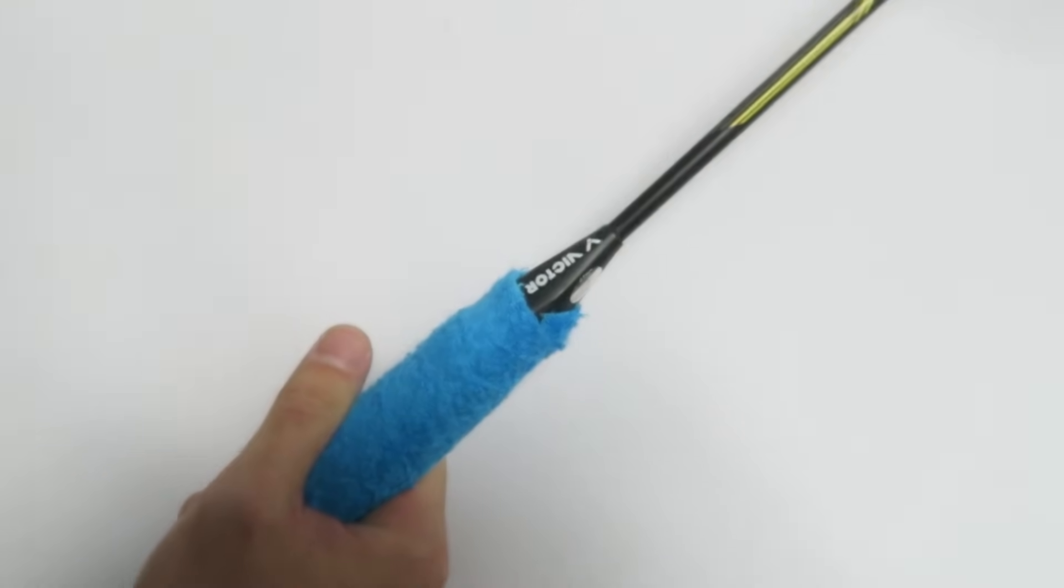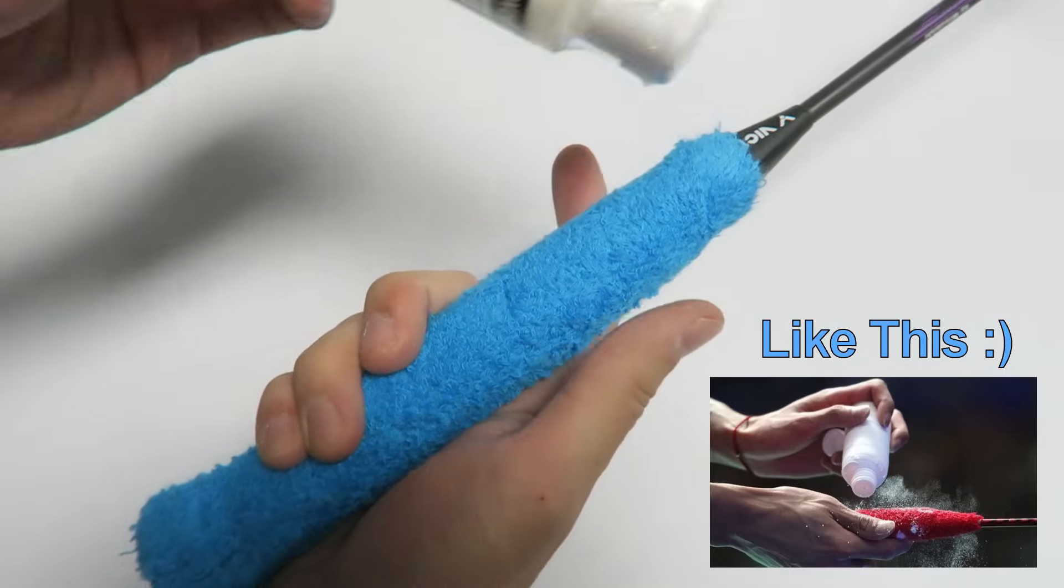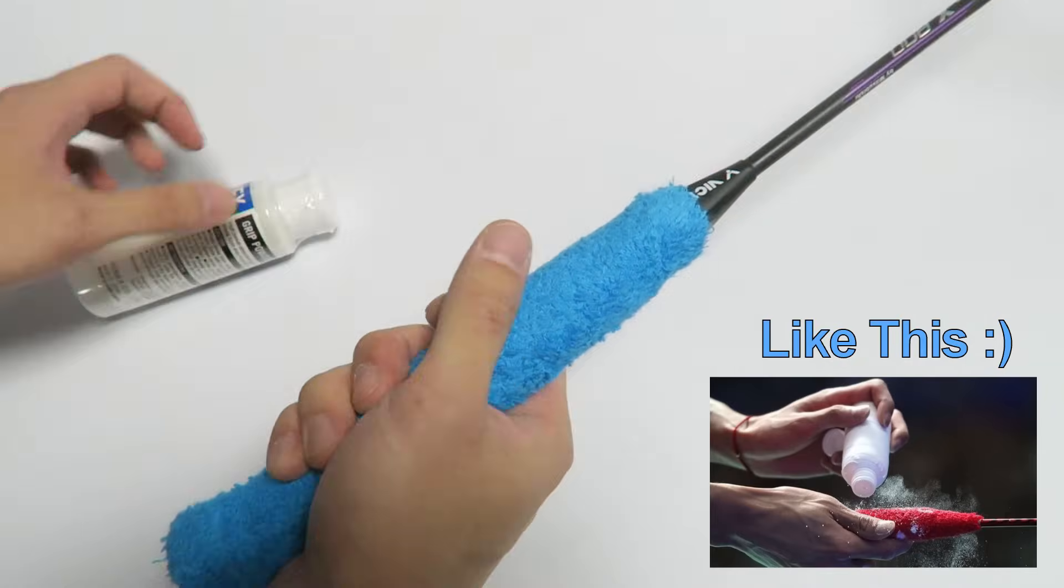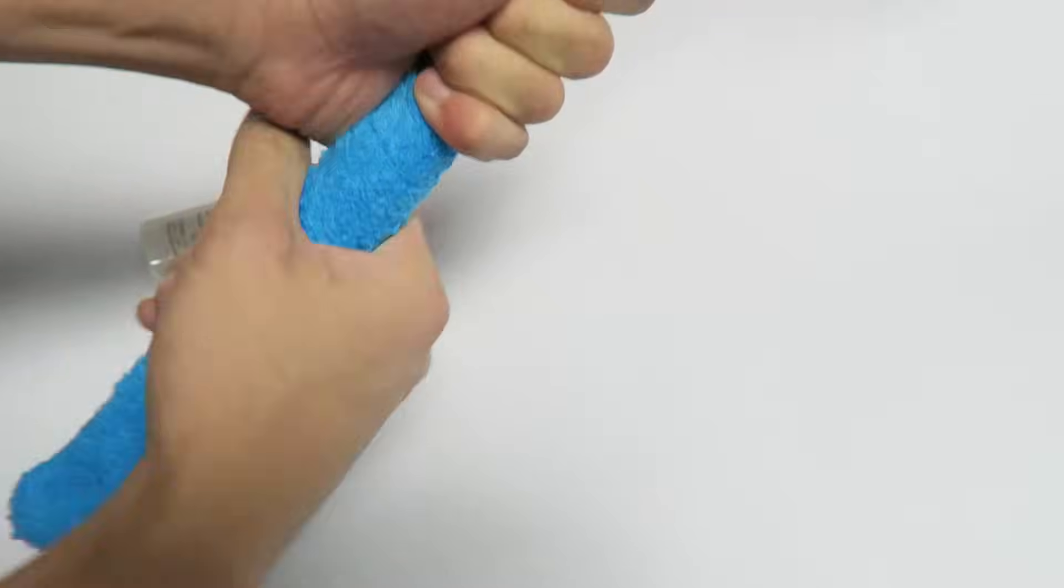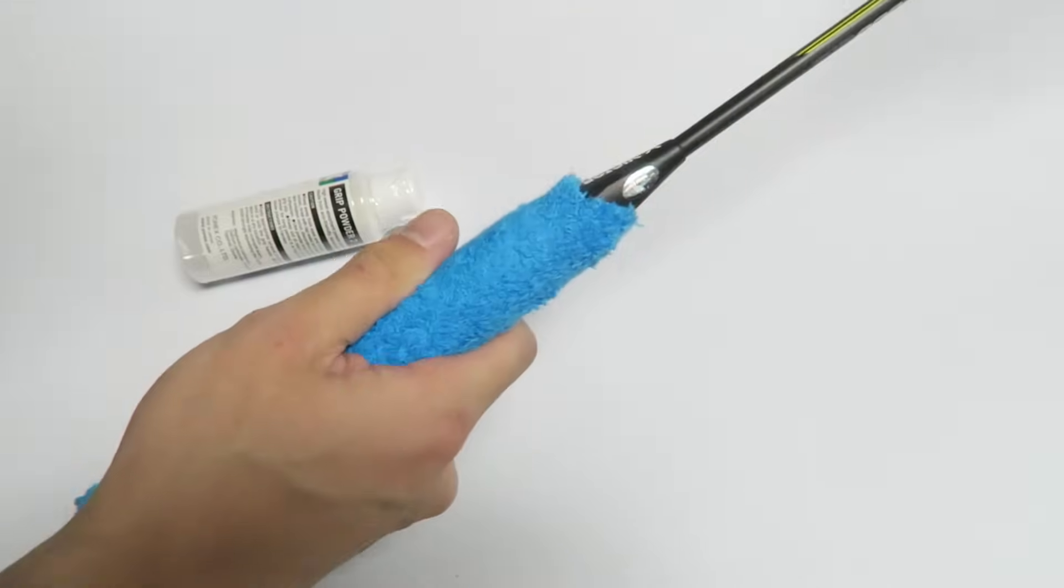And when you want to apply grip powder you just put it all over your grip. And then after that you just give it a good twist to make sure it's covered all over the grip. And then you're good to go.